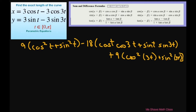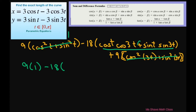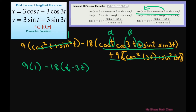Each of those Pythagorean pairs equals 1, so we have 9 times 1 minus 18 times (cosine(t)cosine(3t) plus sine(t)sine(3t)) plus 9 times 1. The middle term is the sum and difference formula with a plus sign between two cosines, so we can condense it as cosine(t minus 3t), where t is alpha and 3t is beta.